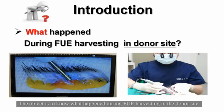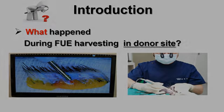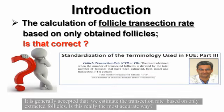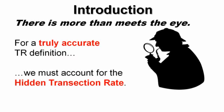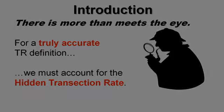The objective is to understand what happens during FUE harvesting in the donor site. It is generally accepted that we estimate the transection rate based on only extracted follicles. But is this really the most accurate way? For a truly accurate transection rate definition, we must account for the hidden transection rate.